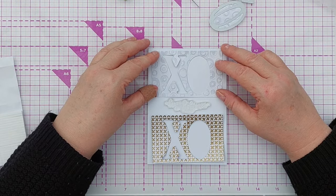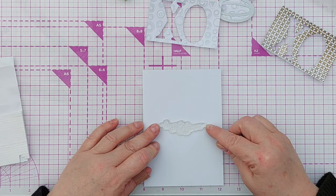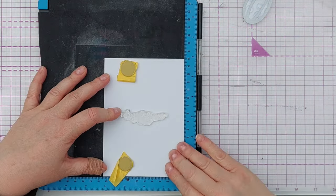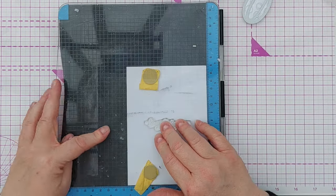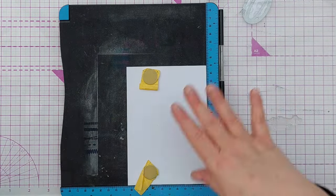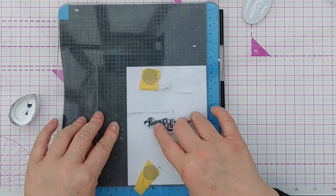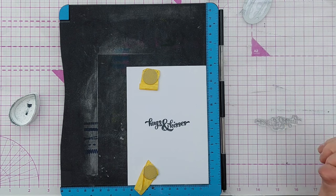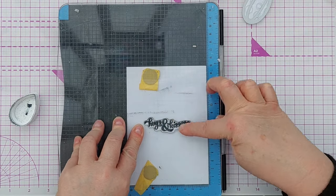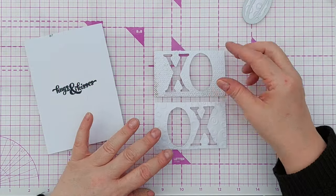I want to pop these up on craft foam to give them a bit of dimension, but that means I need to stamp my sentiment first because it'll be a bit tricky if there is craft foam on there. I'll pop this in my stamp positioner, pick it up, and I'm going to do it in black because I think if I do it in gold it will get lost amongst all the other gold. So that'll do. There's a little white spot there I'm just going to fill in with a pen. Now I'm going to go over the back of these with foam.